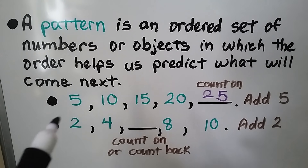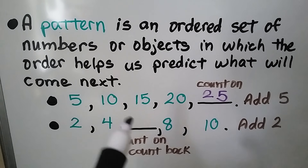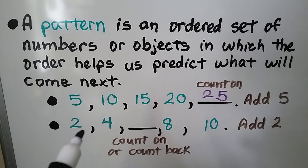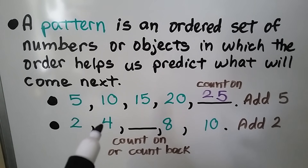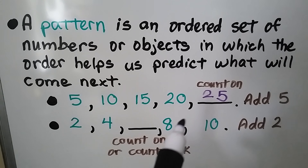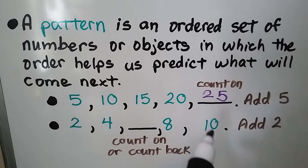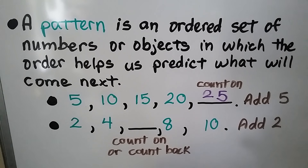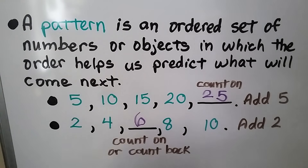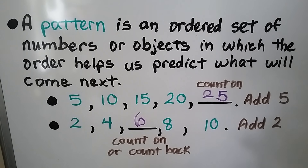For this one, it goes 2, 4, and then we don't know that number, then 8 and 10. We look at the pattern — 2 is being added to each number to get the next number, so we can count on by 2. We could also count back by 2s from 10 to 8. So 2 more than 4, or 2 less than 8, would be 6. That's the number to complete the pattern.